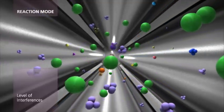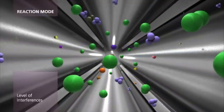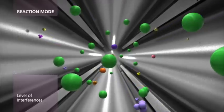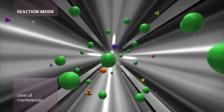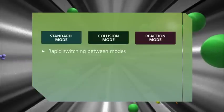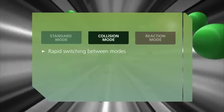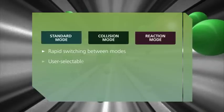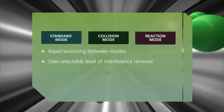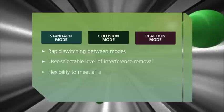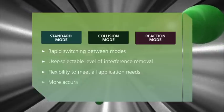By operating as both a collision cell with kinetic energy discrimination and a true reaction cell with a scanning quadrupole, Nexion's universal cell brings together the two most powerful polyatomic interference removal techniques in the same instrument for the first time. No other instrument comes close to delivering the same degree of customizable performance to ensure superior results in any and every application.